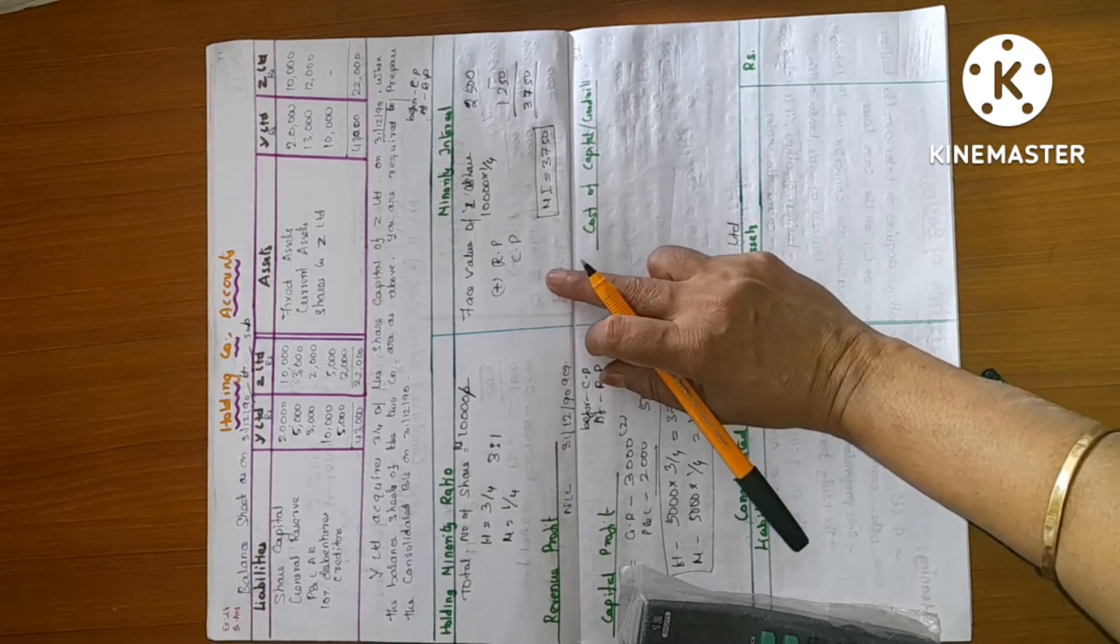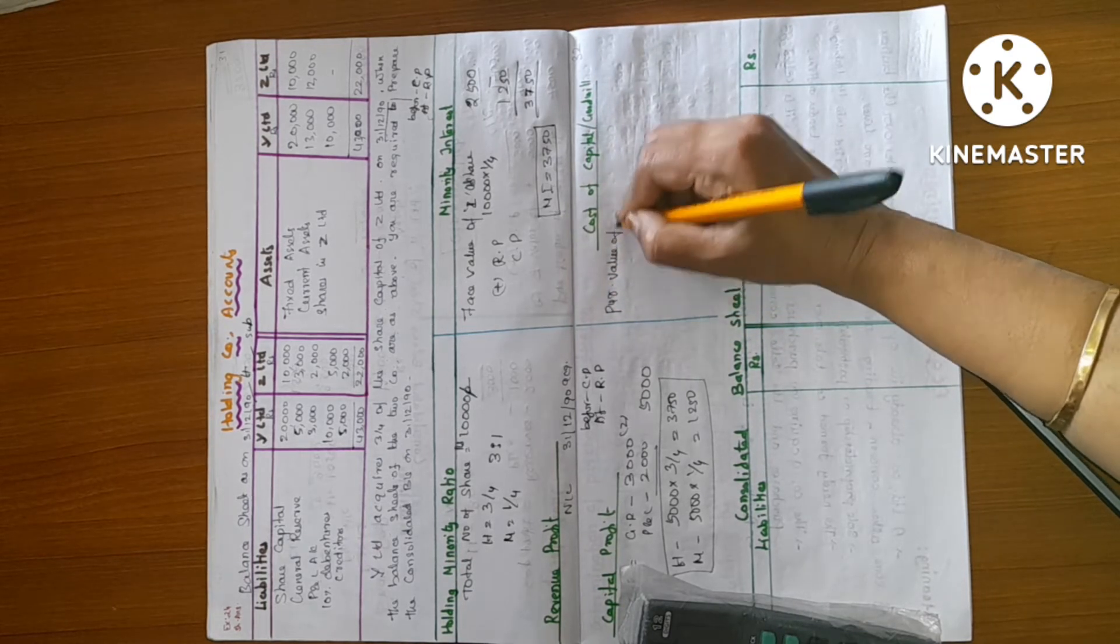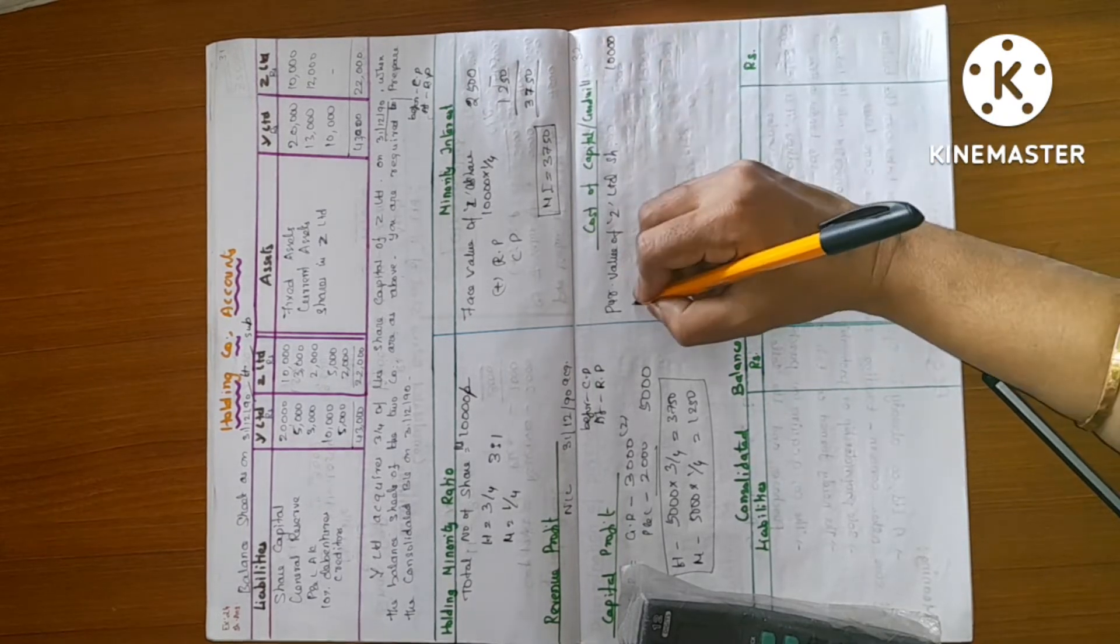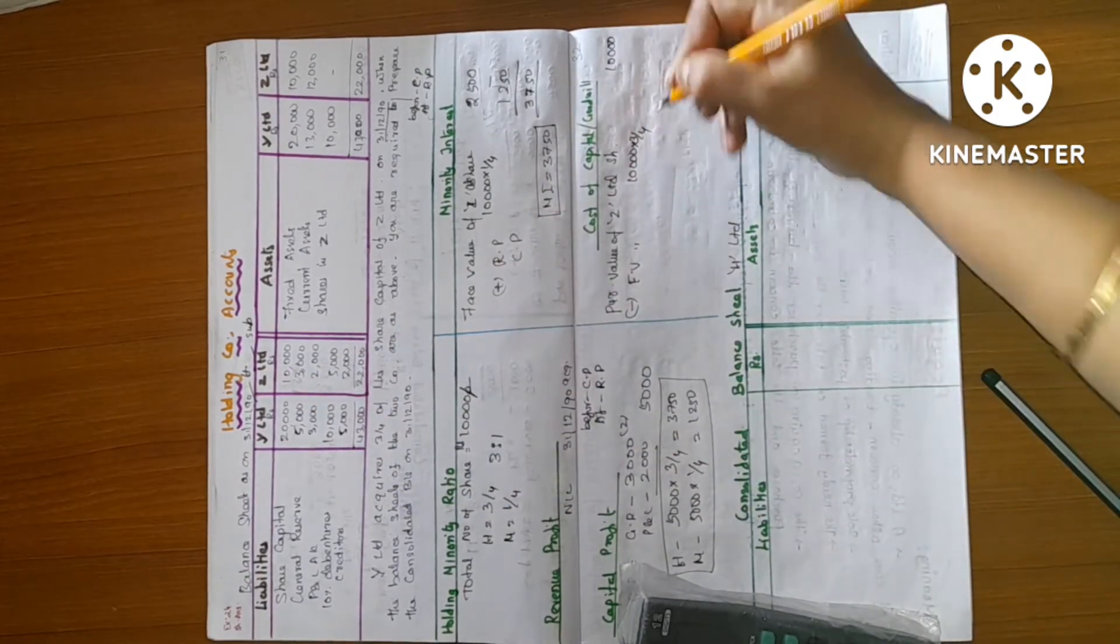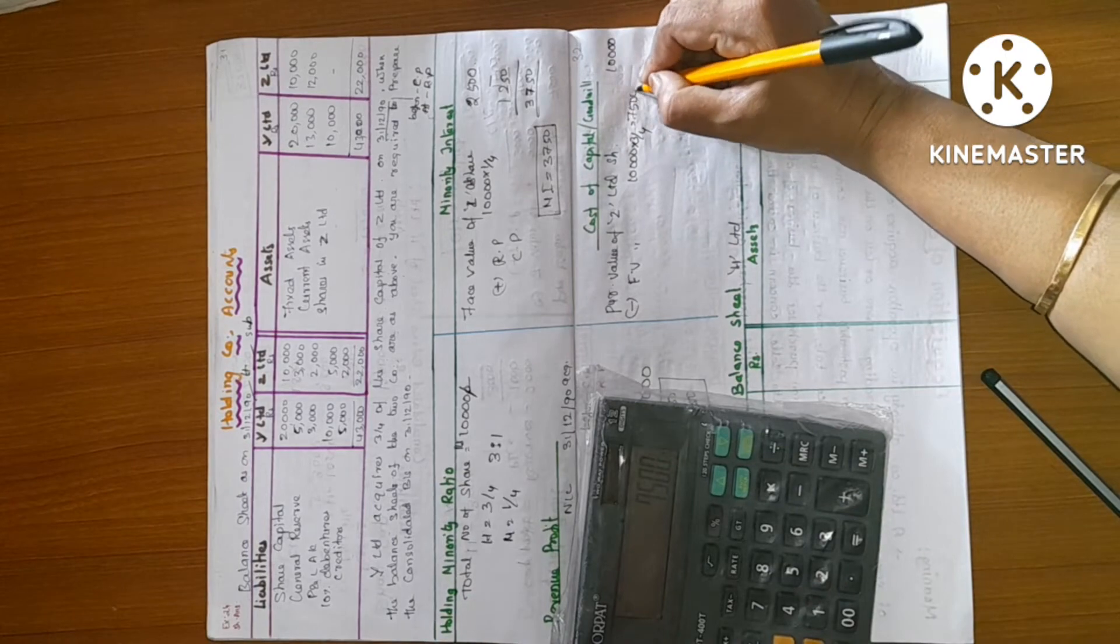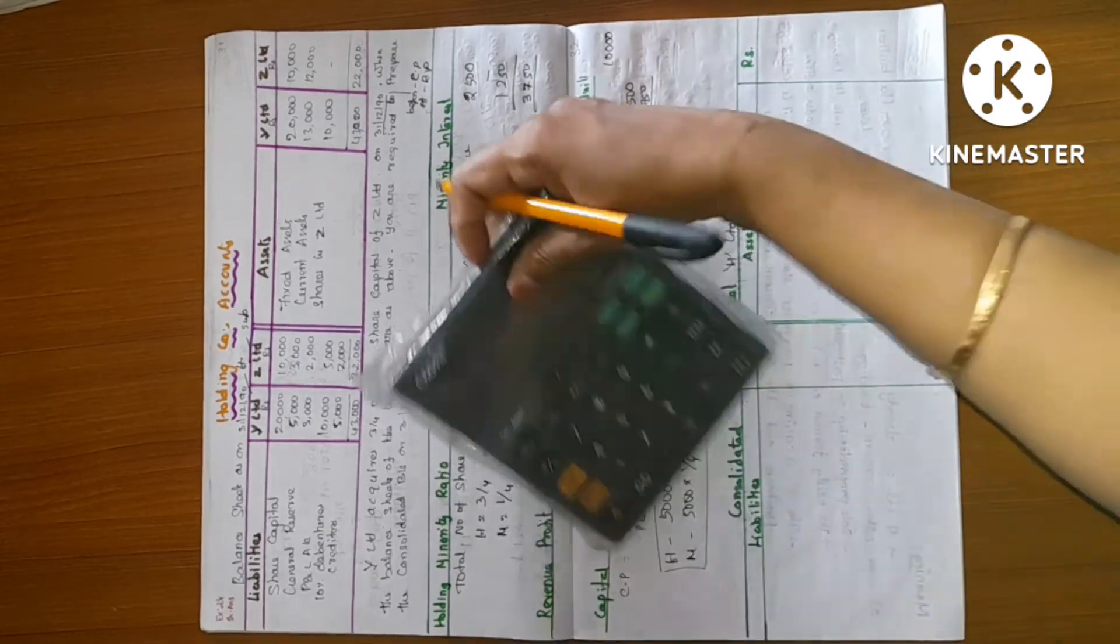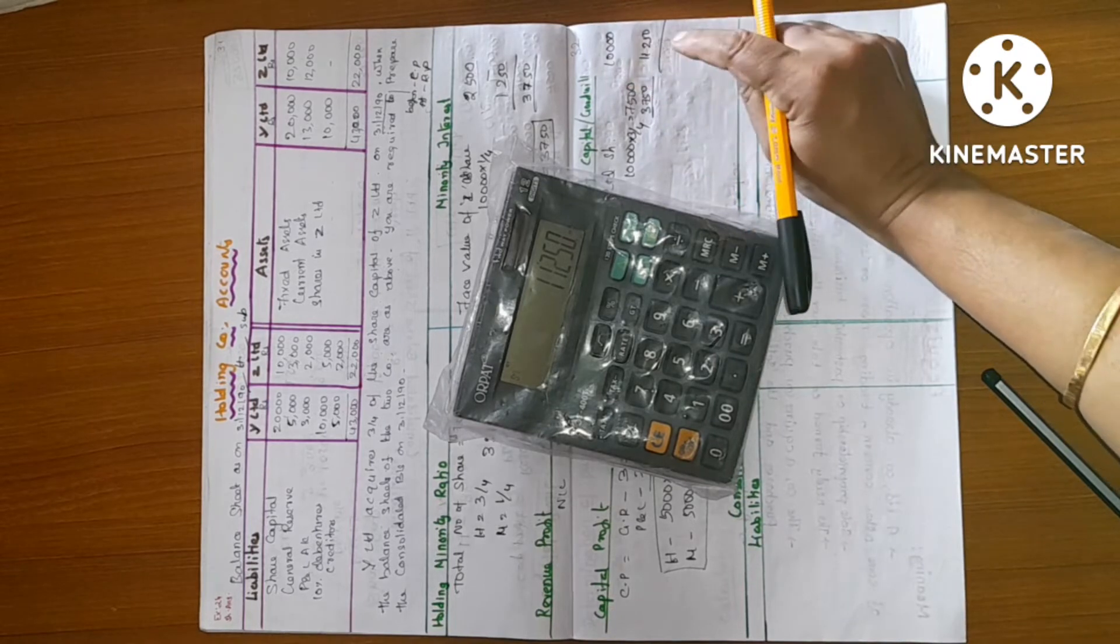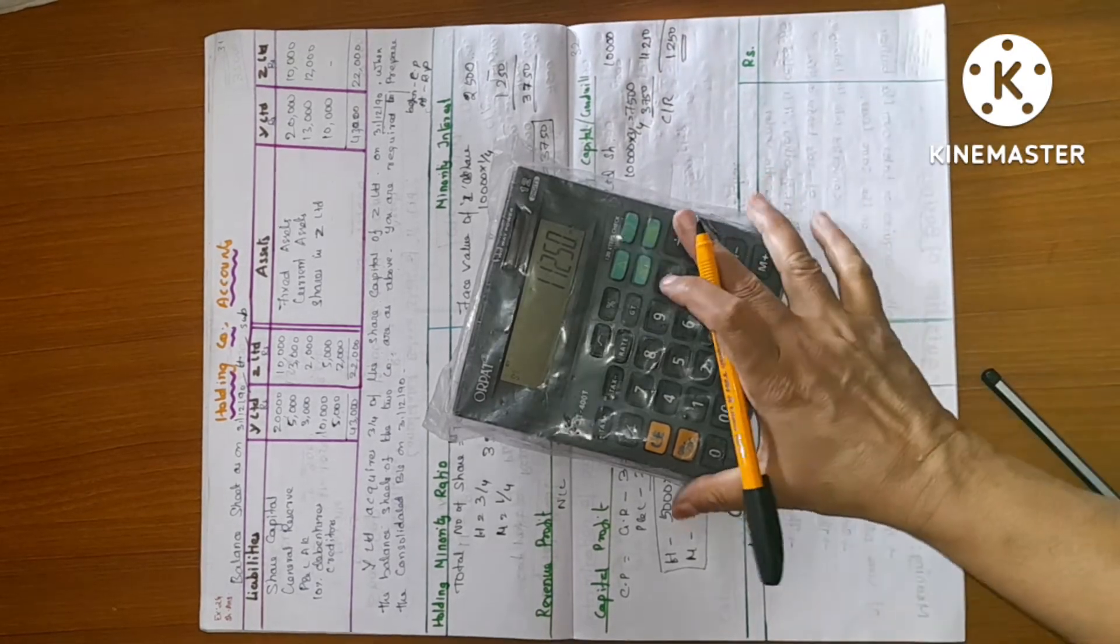Cost of capital. 3,750. Investing Company benefits of parking. Purchase. Purchase value of Z Limited Share. I will purchase 10,000. Less phase value of Z Limited. Total value 10,000 into 3 by 4, 7,500. Capital profit add from 3,750. 7,500 plus 3,750, 11,250. Purchase value is 10,000. Benefit is 11,250, 1,250. Capital Reserve.